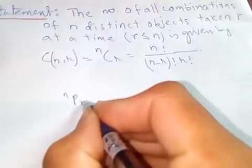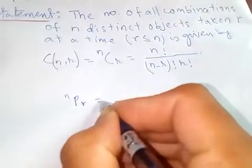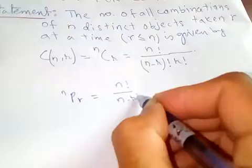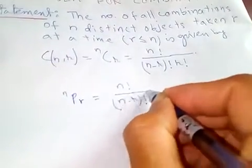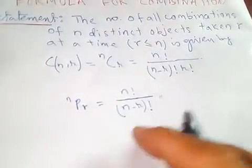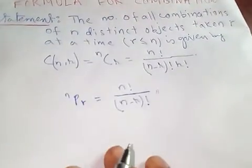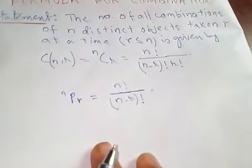Since permutation P(n,r) equals n! over (n-r)! factorial, this is permutation. Permutation is arrangement, and in combination let me show